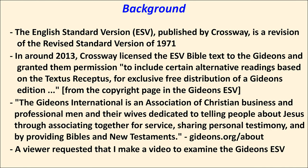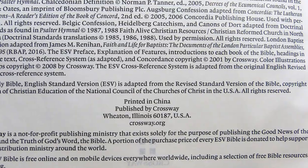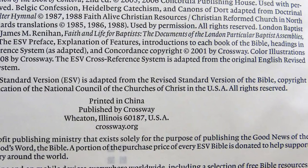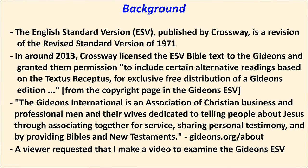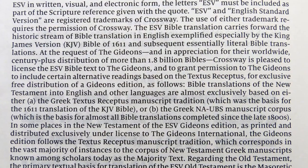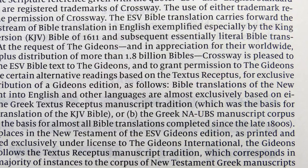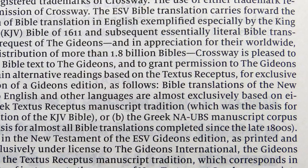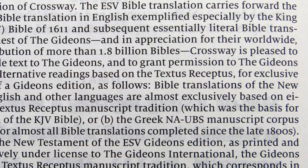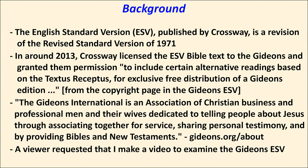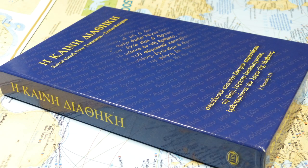Here's the background. The English Standard Version is a Crossway publication, and it is a revision of the Revised Standard Version of 1971. It generally does not follow the TR. In around 2013, Crossway licensed the Gideons to include certain alternative readings based on the Textus Receptus for exclusive free distribution of the Gideon's edition. The Textus Receptus is any of a number of editions of the Greek New Testament, beginning in 1516 with Erasmus's edition, as late as the 1890s with Scrivener's edition.